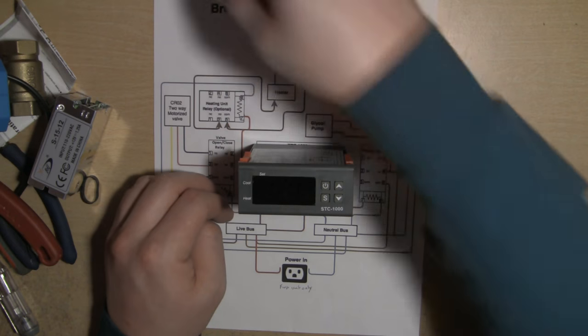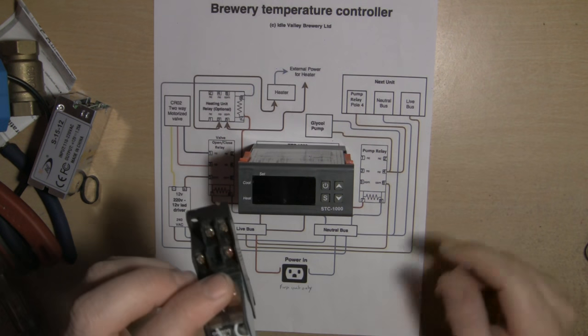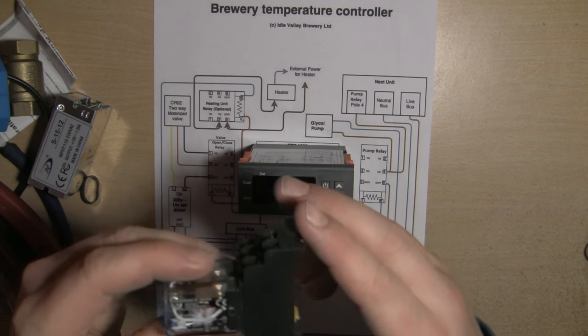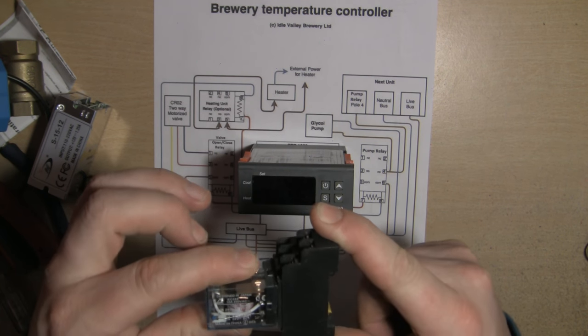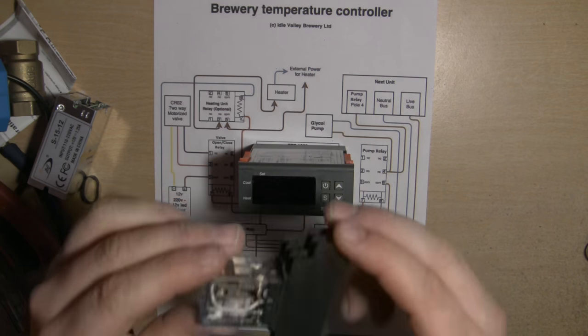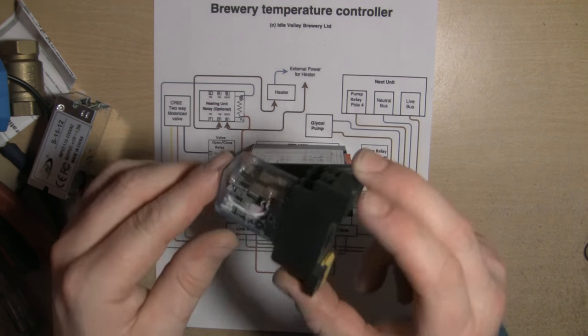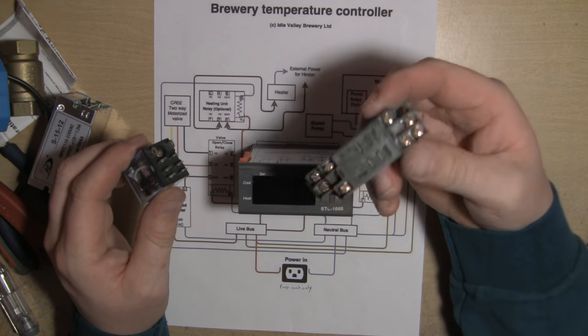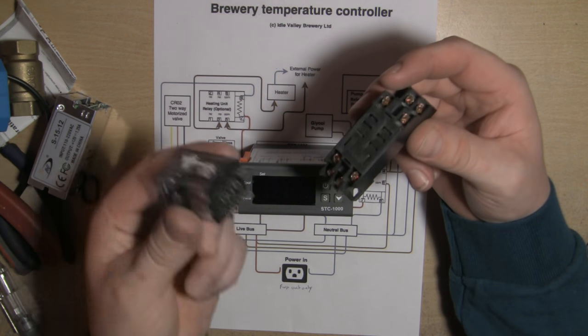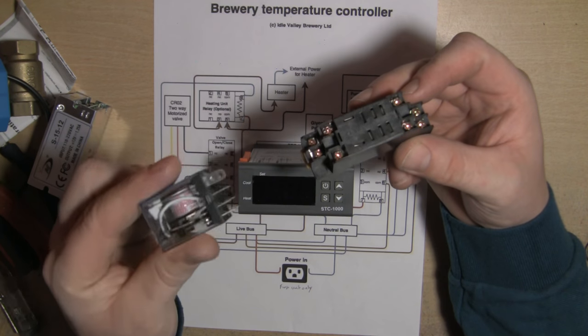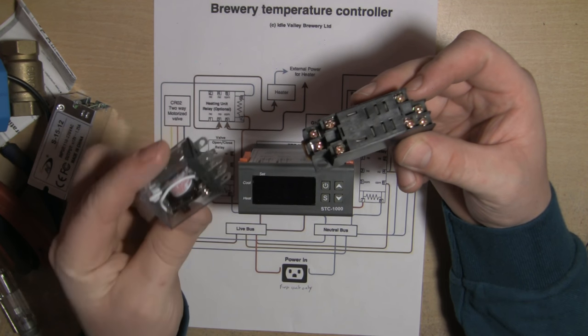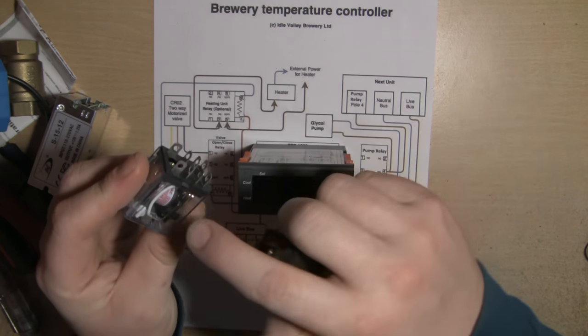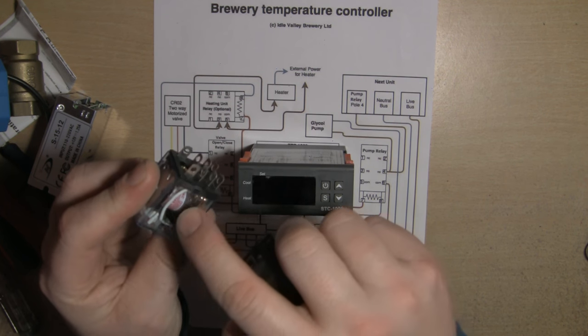Next we have a couple of LY2NJ 10 amp 240 volt AC, 10 amp 28 volt DC double pole double throw relays with sockets. You can buy all these individually. Whenever a relay starts to burn out, because these do fail, particularly if there's a bit of moisture around and with extremes of temperature, the coil starts to go brown.